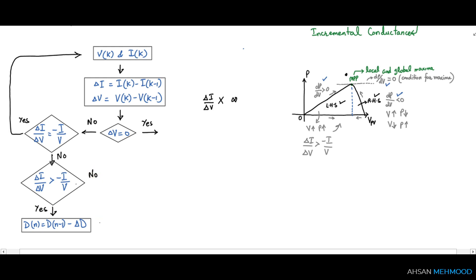But if the answer of this condition is no, then it means we are on the right-hand side of the MPP line. So we should decrease the panel's voltage v, which can be achieved by increasing the value of the duty ratio. Therefore, d(n) equals d(n-1) plus delta d.